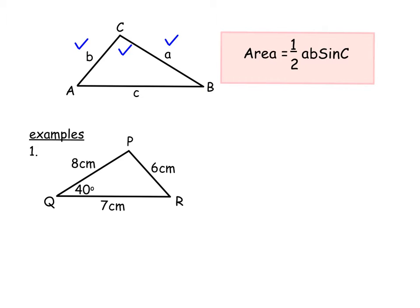So the formula for area of a triangle is area equals half AB sine C. This is given to you in your formula sheet, and notice from the diagram where I've got the blue ticks, that's what you need to know to be able to do this formula. You need to be able to know two sides and the angle enclosed between.